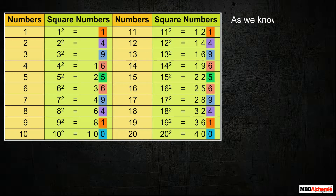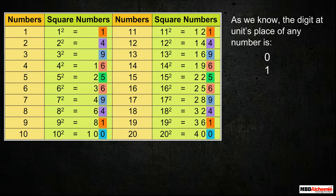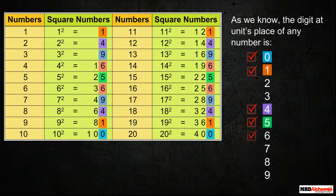As we know, the digit at unit's place of any number is 0 to 9. So, we say that a square number always ends with either 0, or 1, or 4, or 5, or 6, or 9 at its unit's place.